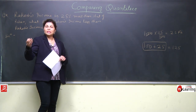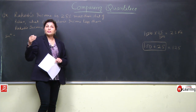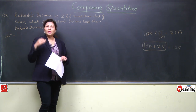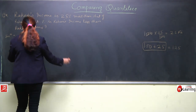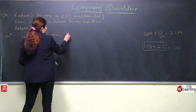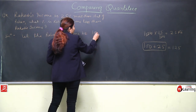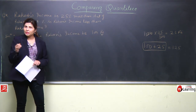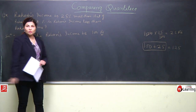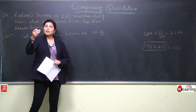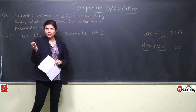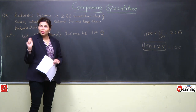आकाश के सुनील से 10 percent marks ज्यादा है, तो let's say सुनील के 100 marks हैं, तो आकाश के 110 हो जाएंगे. Means हम 100 assume करके किसी भी question को solve कर सकते हैं. जैसे सुनील से 10 percent ज्यादा है, तो सुनील के assume कर लें 100 marks हैं, तो 10 percent ज्यादा यानि 110 आकाश के हैं. ऐसे आप रोज़मर्रा की life में कुछ भी example use कर सकते हैं.